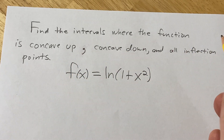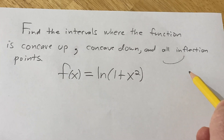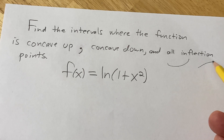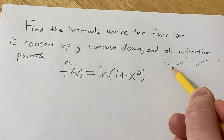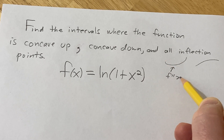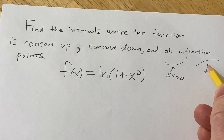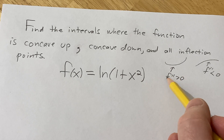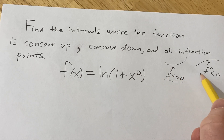Concave up basically means that the graph is going to look something like this — that's called concave up. And concave down basically means the graph looks something like this — that's called concave down. Whenever this happens on some interval, the second derivative is positive. And whenever this happens on some interval, the second derivative is negative. So we have to find the intervals where the second derivative is positive and where it is negative.